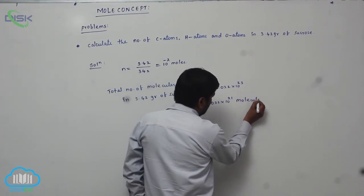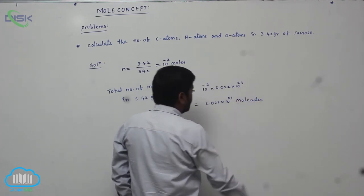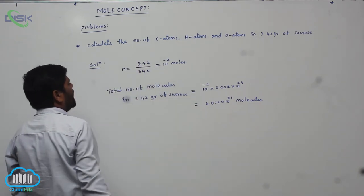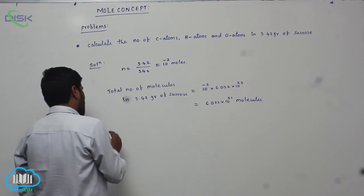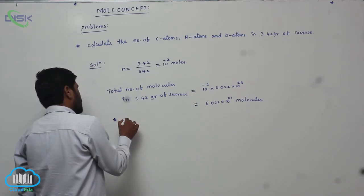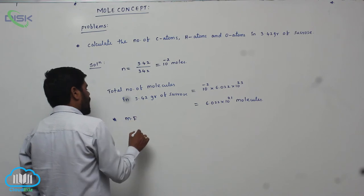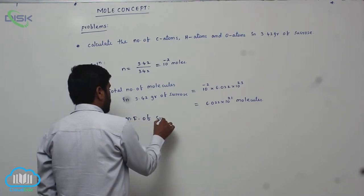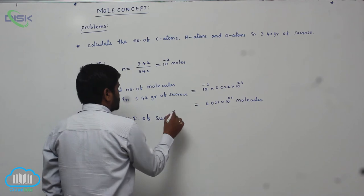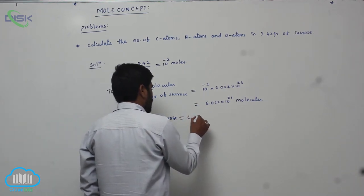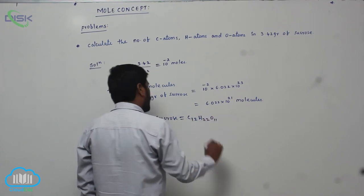This is the total number of molecules. The molecular formula of sucrose equals C12 H22 O11.